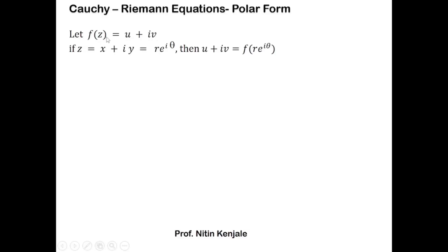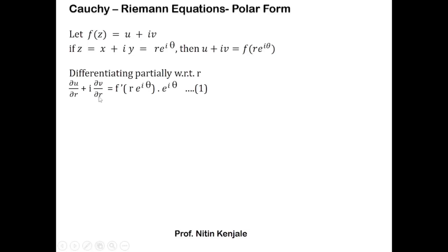Now we differentiate this equation partially with respect to r. The left-hand side becomes ∂u/∂r + i·∂v/∂r, while the right-hand side becomes f'(re^(iθ)) times the derivative of re^(iθ) with respect to r, which is simply e^(iθ). We label this as equation number one.